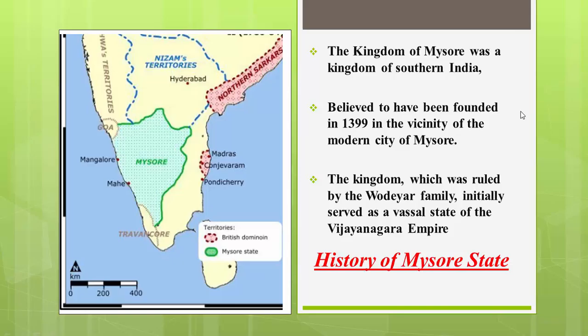Mysore was a kingdom in southern India, in the peninsular part of the country. It was a very important kingdom politically, especially after the decline of the Mughal Empire. Located between the Western and Eastern Ghats, it was divided by the Kaveri river and was very prosperous in agriculture, crafts, and textiles.